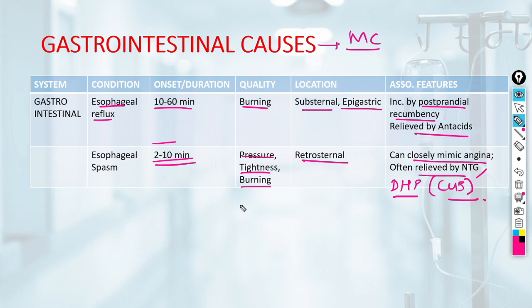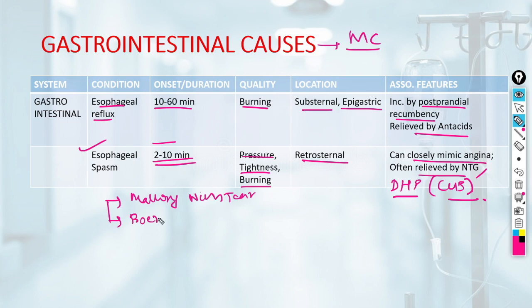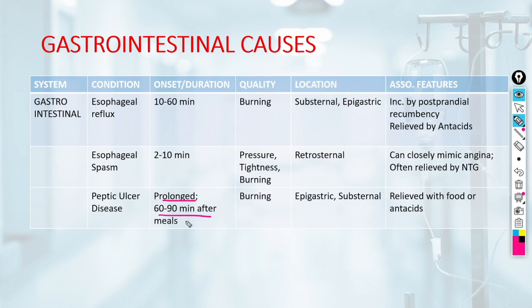Esophageal spasm also involves very intense squeezing discomfort. Esophageal disorders like Mallory-Weiss tear can also cause chest pain. Rupture of the esophagus in severe vomiting — known as Boerhaave syndrome — causes sudden onset chest pain and is an emergency. Peptic ulcer disease causes prolonged pain 60 to 90 minutes after meals, typically burning, epigastric but sometimes substernal. It is relieved by taking food and antacids.